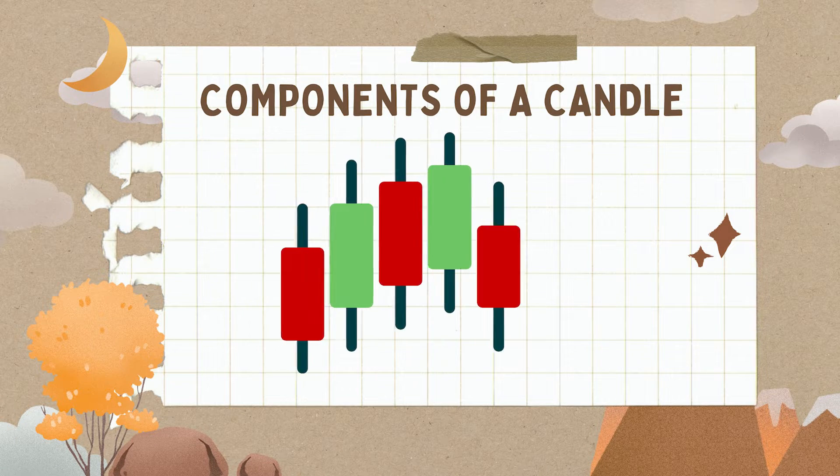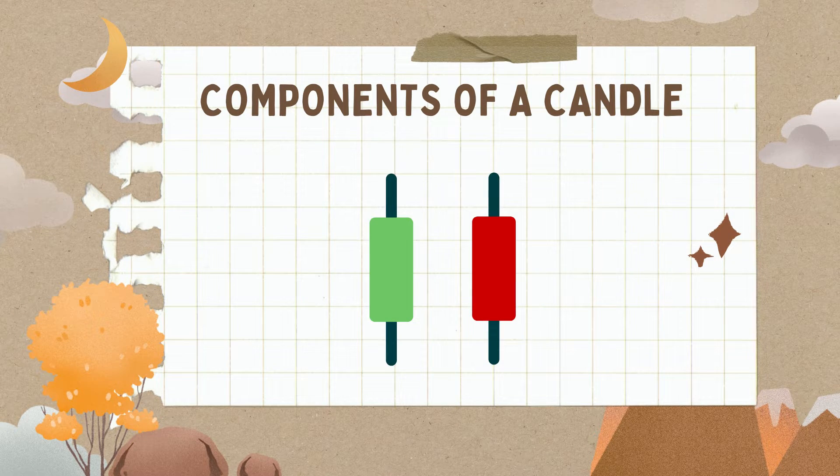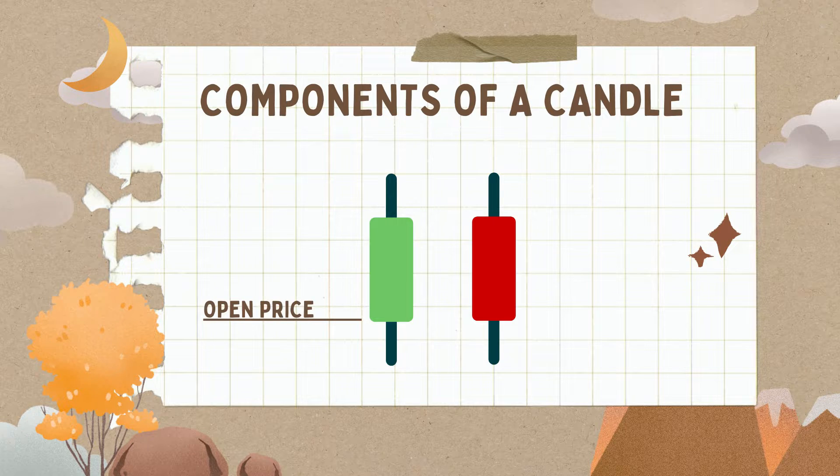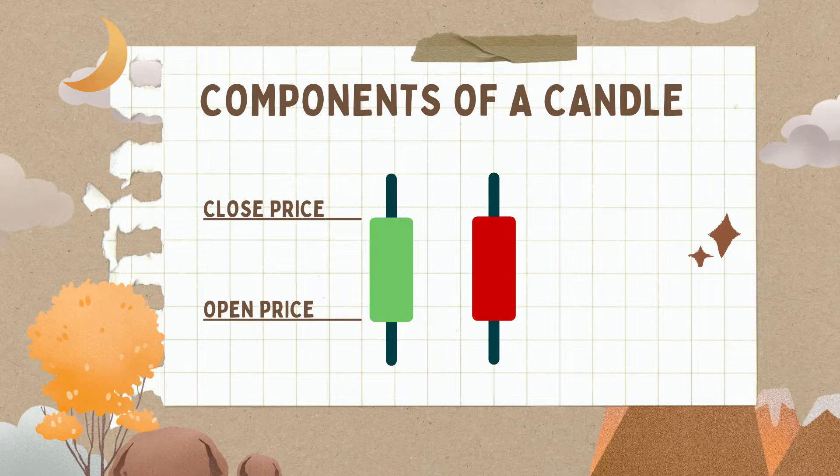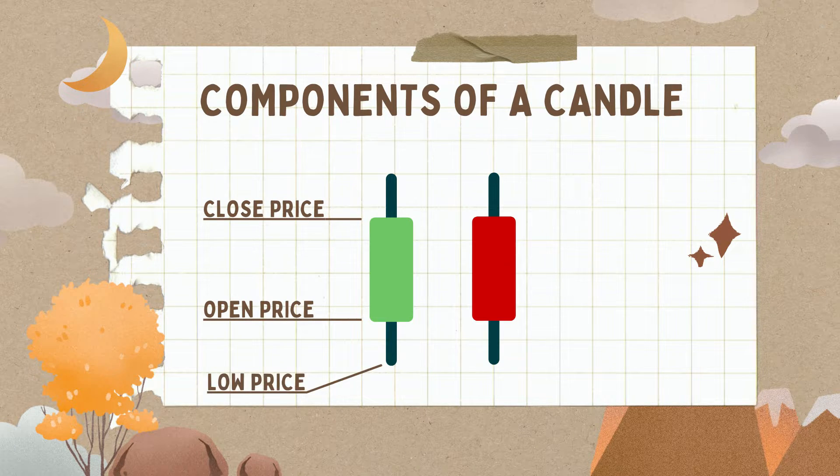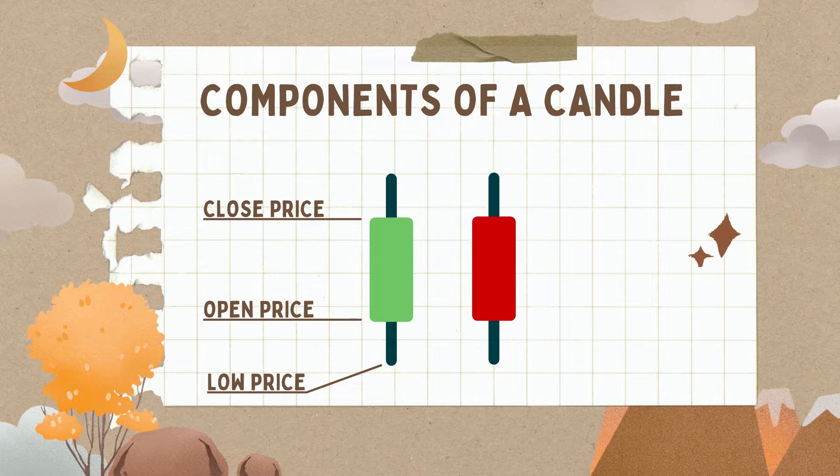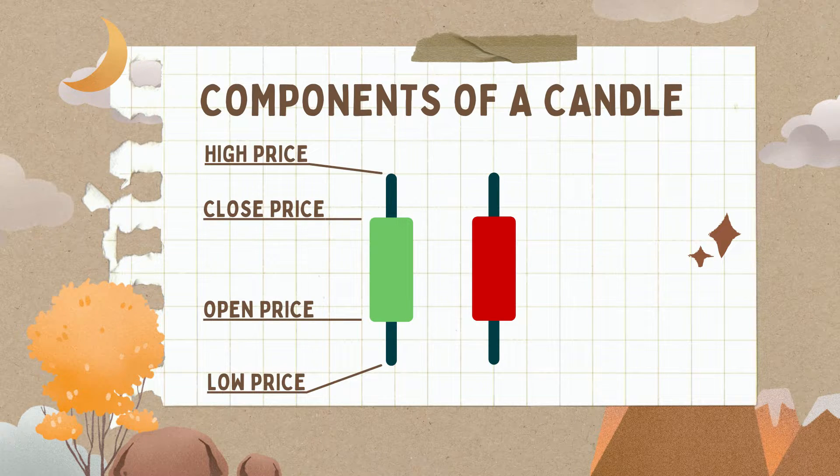On the chart, you will notice there are green and red candles. On a green candle, the bottom of the body is where the stock opened in the time period. The top is where the stock closed. The bottom wick is the lowest the price went, and the top wick is the highest the price went.